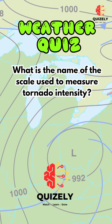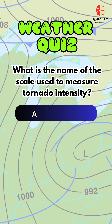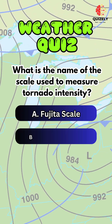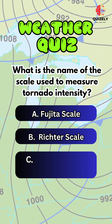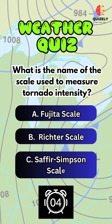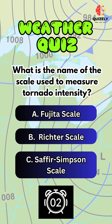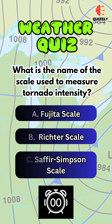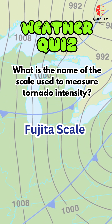What is the name of the scale used to measure tornado intensity? A. Fujita scale. B. Richter scale. C. Saffir-Simpson scale. A. Fujita scale is the right answer.